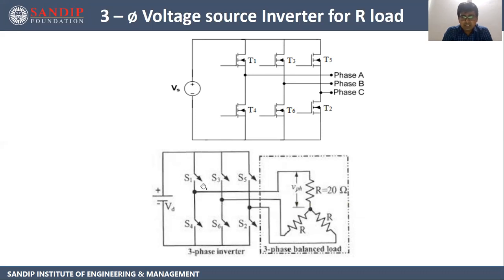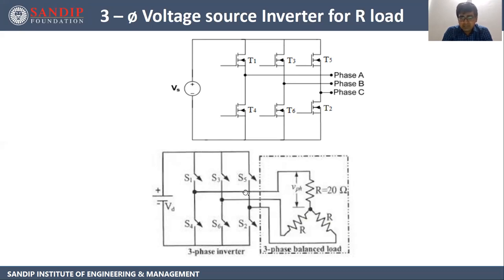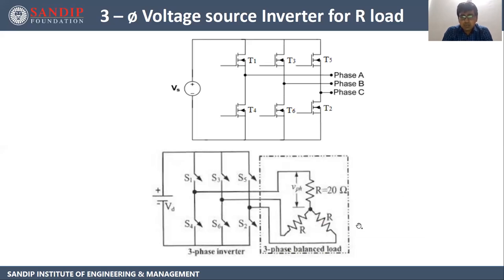Now, how has the load been connected? You can see phase A, phase B, and phase C. We can either connect a star load or a delta load. In this figure we have connected a star load. The resistance for phase A will be Ra, for phase B will be Rb, and for phase C will be Rc. We will assume that Ra = Rb = Rc = R.